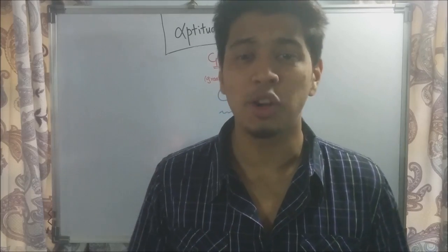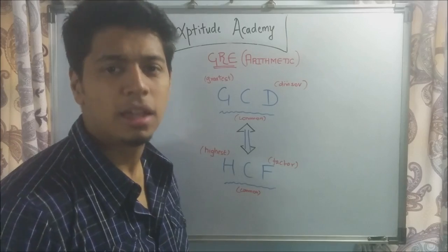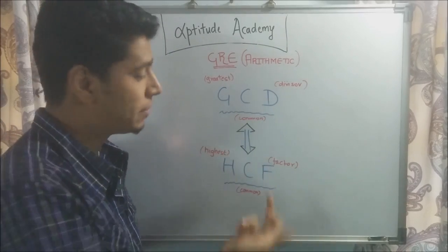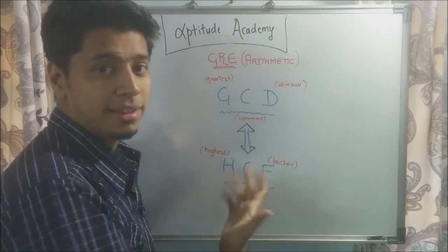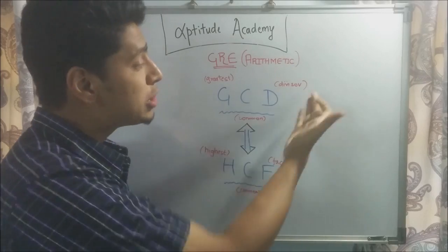Now before we move any further, a common doubt that everyone has: Is GCD and HCF the same thing? G is greatest, H is highest. They both mean the same. C is common, C is common. And D is divisor and F is factor, which also means the same thing.